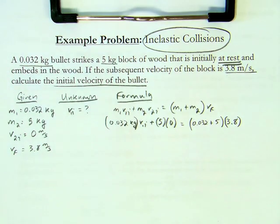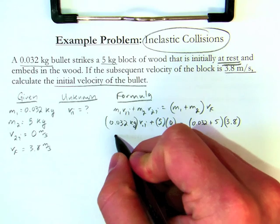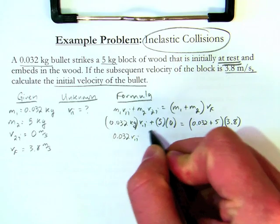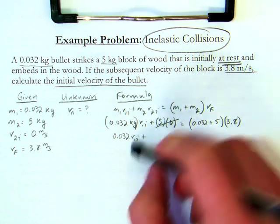Now, as I look at combining these, I know that I don't know the initial velocity of 1, so I'll just leave it as 0.032 v1 i, plus I know 5 times 0 is 0, so I can just leave that on the left side of the equation there.